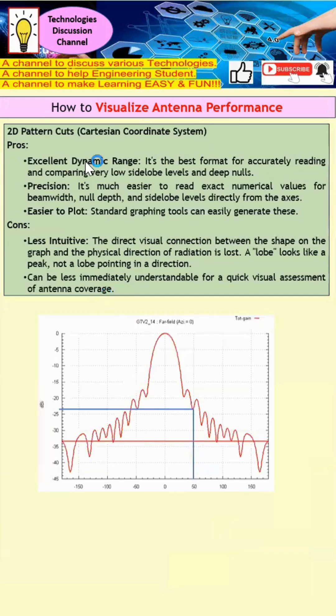Next is the 2D Cartesian coordinate system. What are the pros of using this system? It provides excellent dynamic range. What is dynamic range? Basically, dynamic range refers to the highest and lowest points. From this diagram, you can clearly see the highest and lowest points.